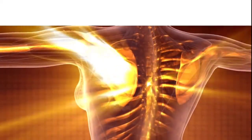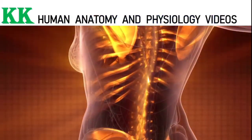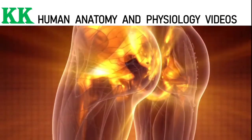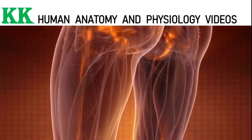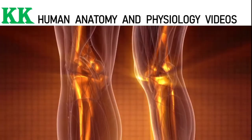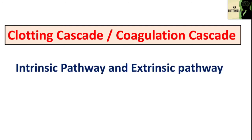Hello everyone, welcome to KK Human Anatomy and Physiology videos, a platform where you will get interesting and informative facts about human anatomy and physiology. In this video, we are going to talk about two pathways of coagulation cascade, that is intrinsic pathway and extrinsic pathway.